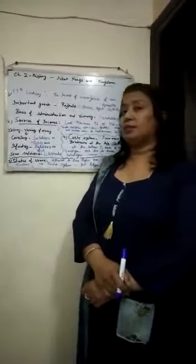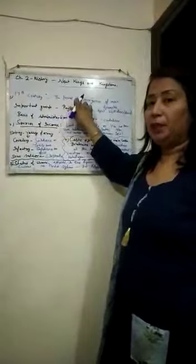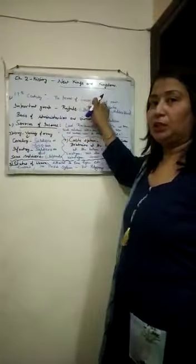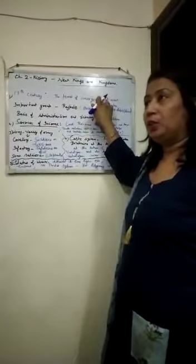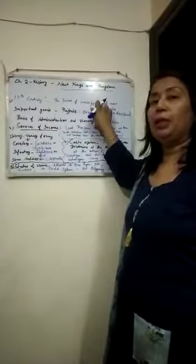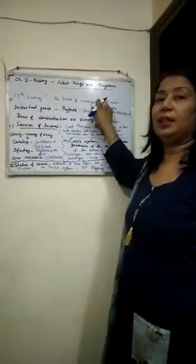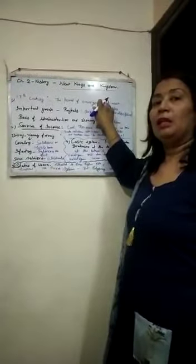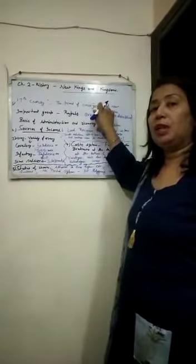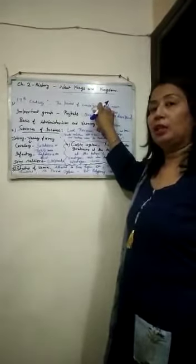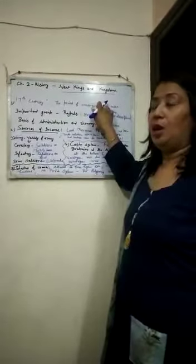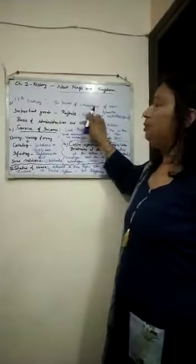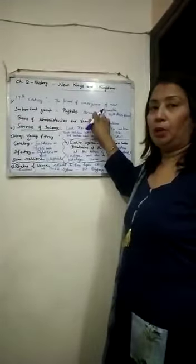We had discussed the 17th century — it was the period of emergence of new dynasties. We had seen there were so many dynasties at that time: Kachwaha, Sosodiyas, Salamkis, Rajputs, etc. Among them, Rajputs were very important.